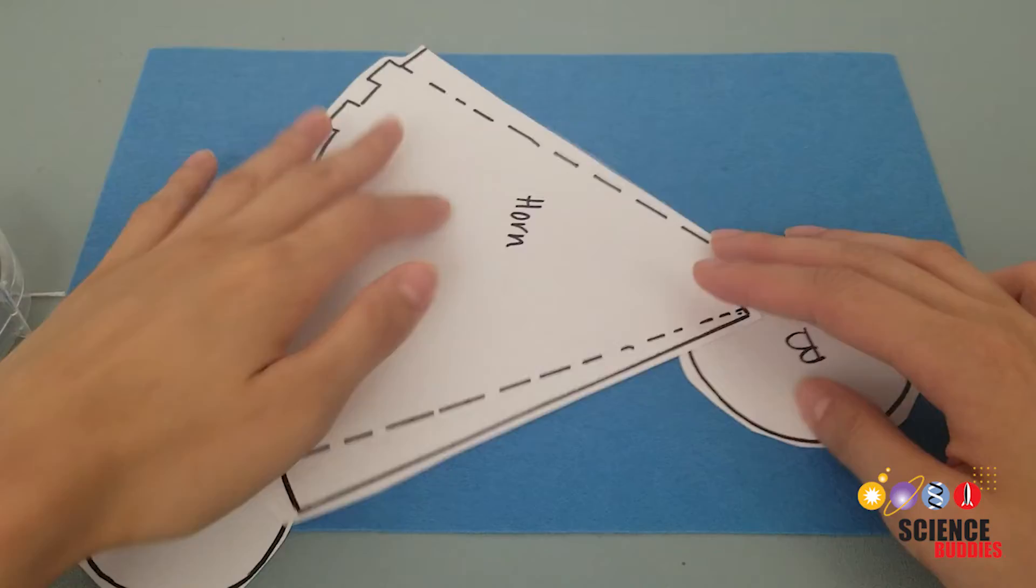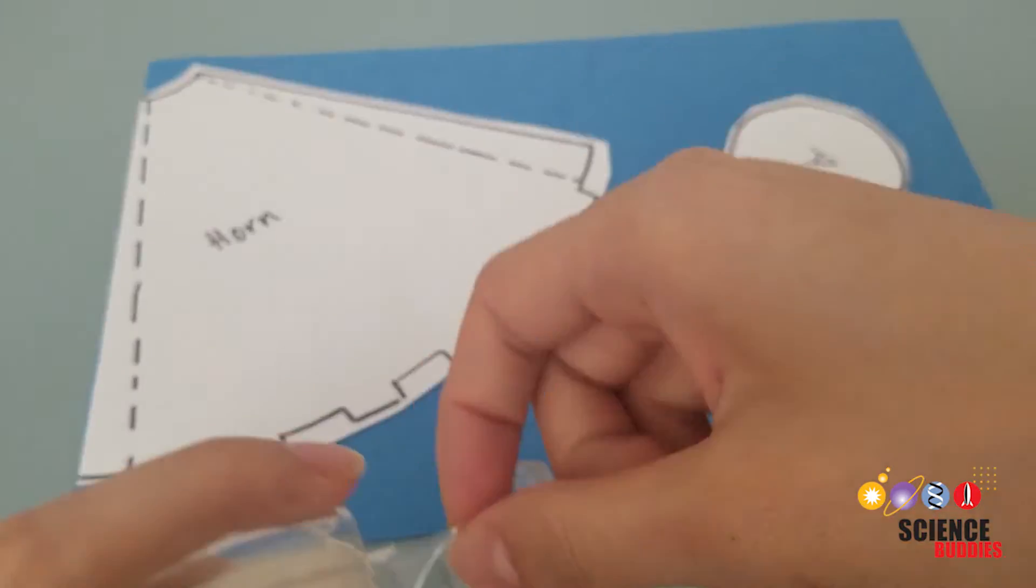Part 2, Preparing your horn. We will be making a unicorn horn as an example in this video, but you could also attach your RGB LED to another item or article of clothing. From your printed activity template, cut out the shapes roughly.